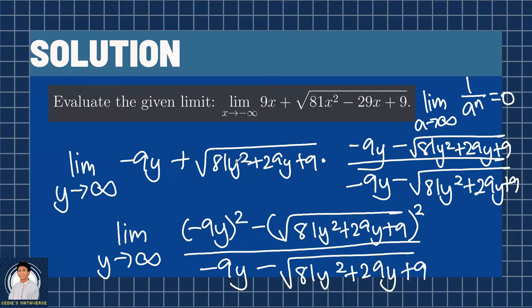This becomes 81y squared. The square root of the square is obviously the number itself. So, we will cancel the square root, leaving us 81y squared plus 29y plus 9 and close in parentheses.